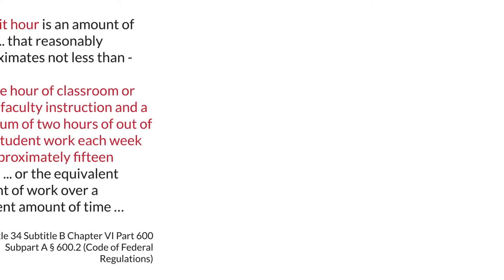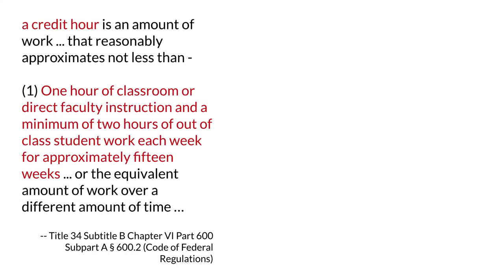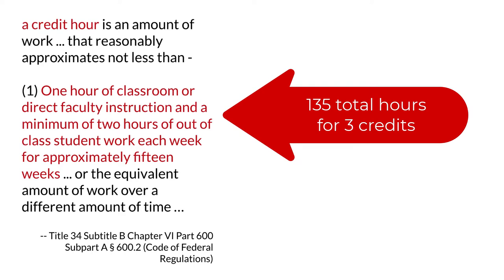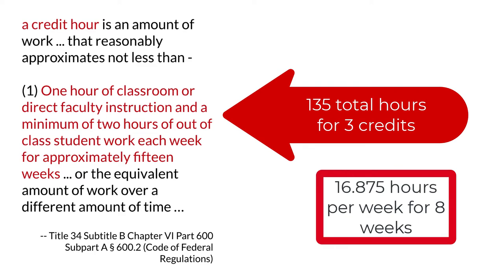Here's some background you may not know. In the U.S., universities that receive any federal funds use this definition of credit hour: one hour of classroom or direct faculty instruction and a minimum of two hours of out-of-class student work each week for approximately 15 weeks. So a three credit hour course must include at least three hours of instruction plus six hours of out-of-class work for 15 weeks — a total of 135 hours. If we divide those hours over eight weeks instead of 15, we get 16.87 hours per week.